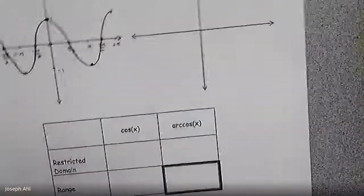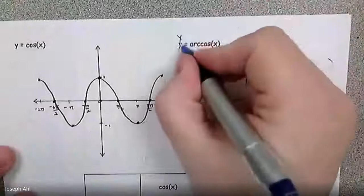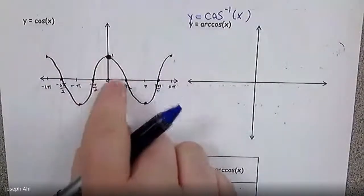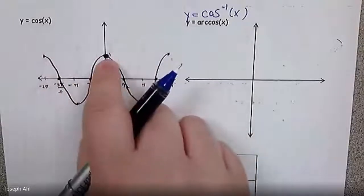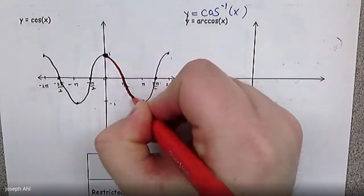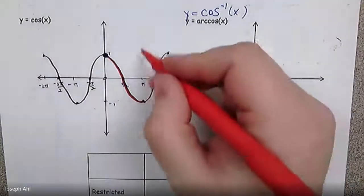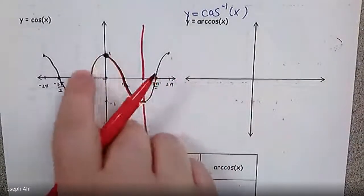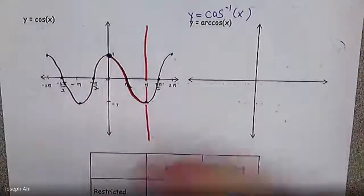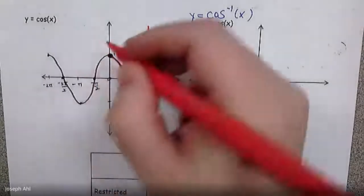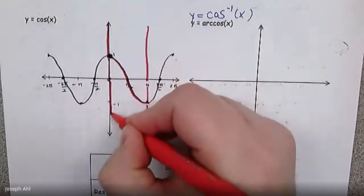Let's move on to arccosine of x — the same idea as cosine inverse. Here are two cycles of the cosine curve. Starting at x = 0, how far can I travel to the right until I fail the horizontal line test? I can go all the way through π/2 and down to π, but then I have to stop. If I try to go to the left of 0, we start failing the horizontal line test right away. So the restricted domain for cosine x is from 0 to π.